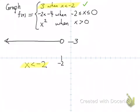And furthermore, it's going to be an open circle right above negative 2, because x is not actually less than or equal to negative 2. It's only less than negative 2. Once we've done that piece, let's move on to the next one.